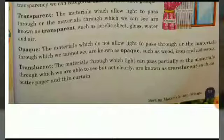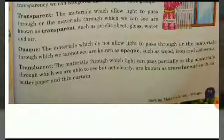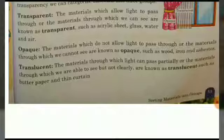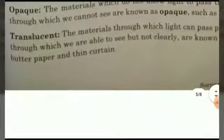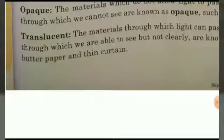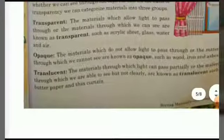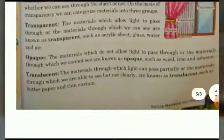The third group is translucent materials. These are materials through which light can pass partially — you can partially see objects on the other side, but not completely clearly. Examples include butter paper and thin curtain cloth, through which things are only partially visible.